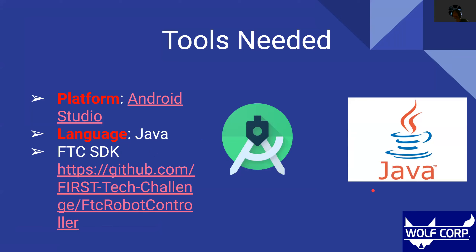Starting us off, we have the tools we need to actually start programming the robot. The platform we'll be using is Android Studio — an IDE, also known as an integrated development environment, for Google's Android operating system. The language we'll be using is Java, developed by Oracle and marketed as a class-based object-oriented programming language. Make sure you have Java installed on your computer. Lastly, we need the FIRST Tech Challenge SDK, or software development kit, which holds all the software tools and programs needed to program the robot. We have the link down there.